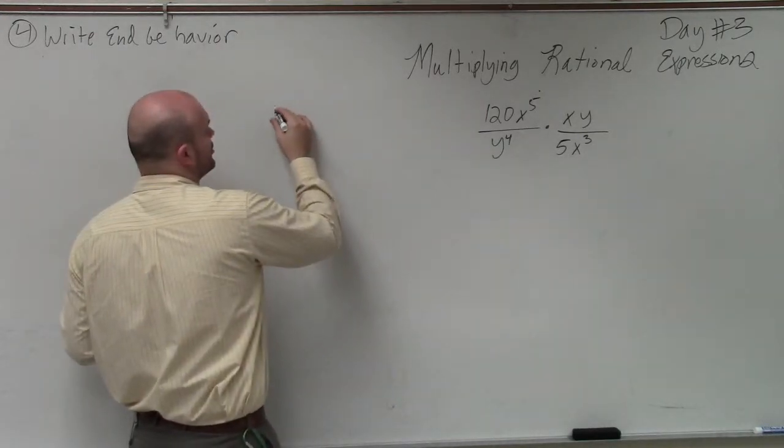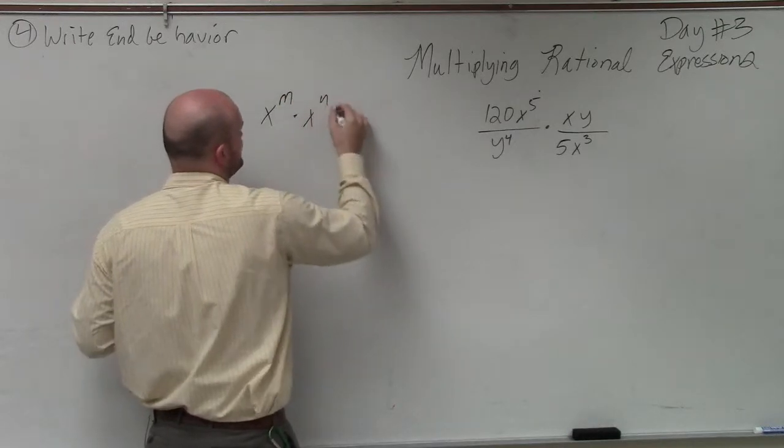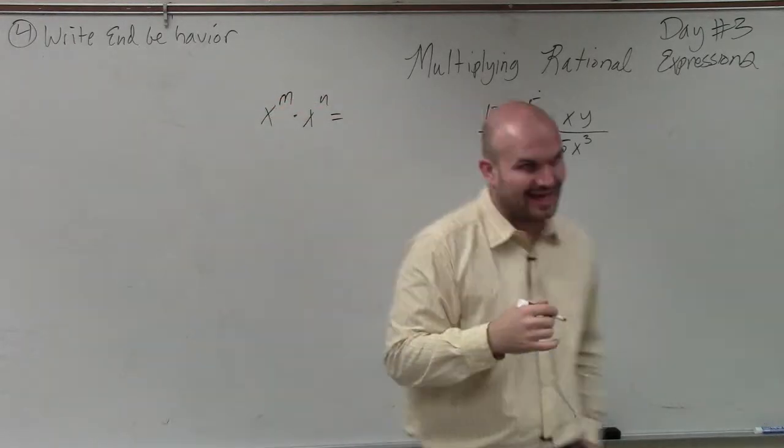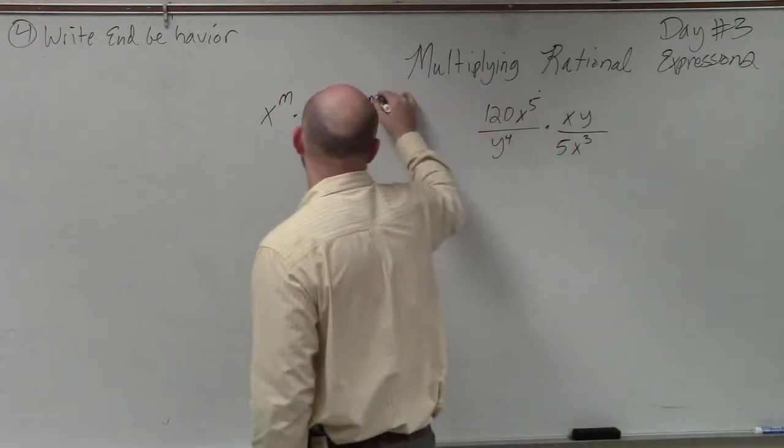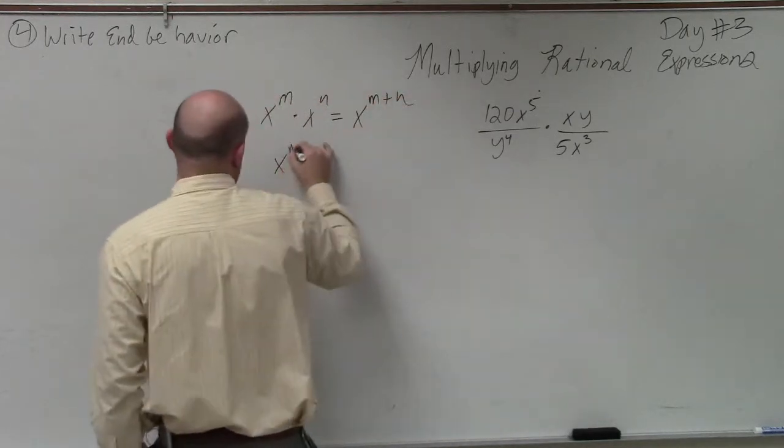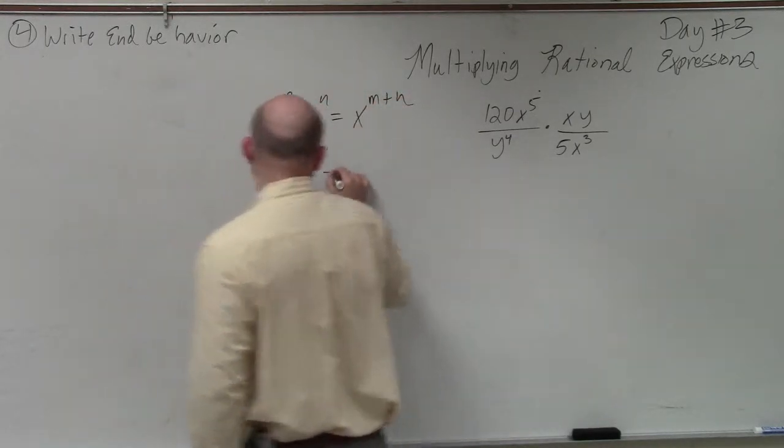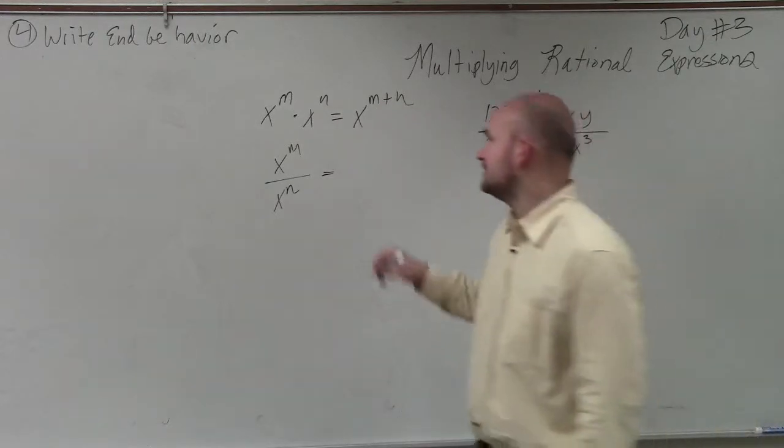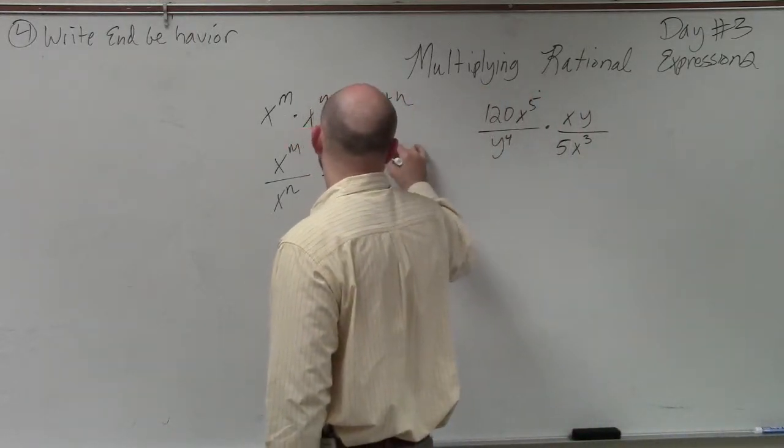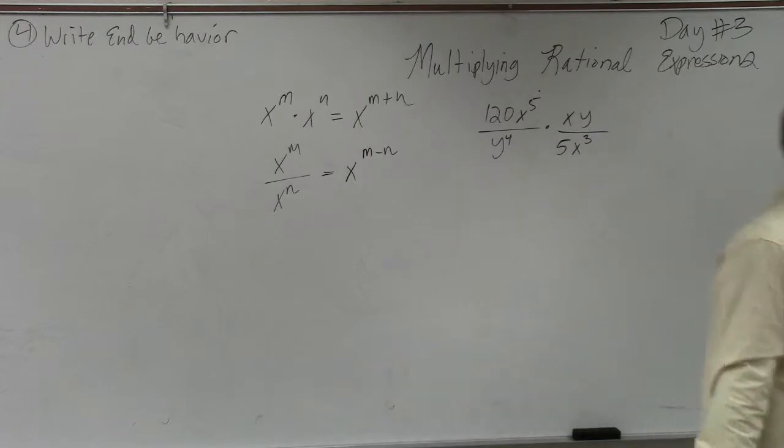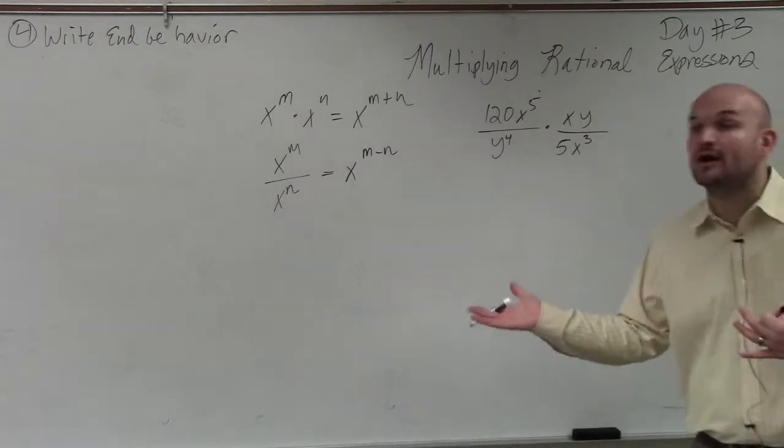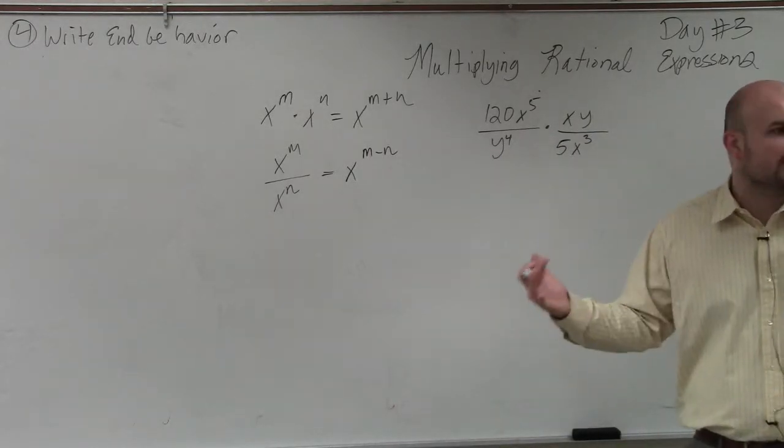The first was what we call the product rule, which stated if you multiply an exponent times an exponent, then you add the exponents. And if you take another exponent and divide it, then you subtract the powers. Is everybody following me with that? That's what we went over day one, right? And basically, we're going to be using those two.